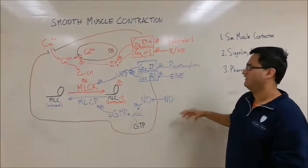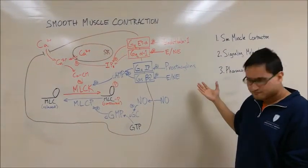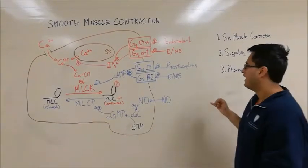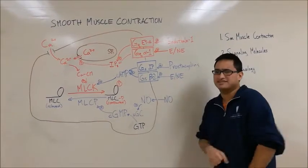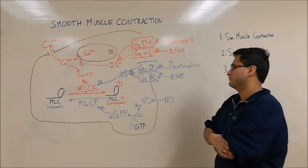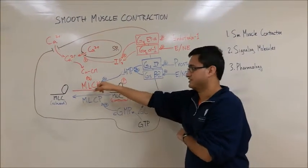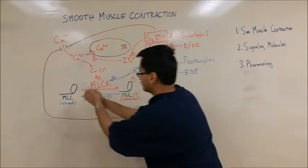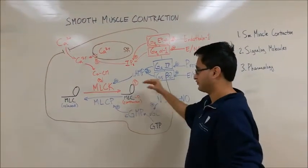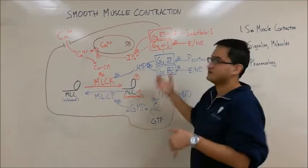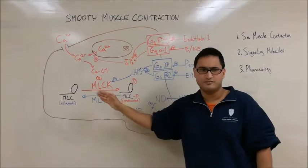Now here we have three vasodilating pathways. Prostacyclins are released by endothelial cells and travel to the smooth muscle cell to bind to the Gs receptor. Gs receptors activate adenylyl cyclase, which converts ATP to cyclic AMP. Cyclic AMP then inhibits MLCK, promoting myosin in the unphosphorylated and relaxed state — therefore reducing contraction. So prostacyclins promote smooth muscle relaxation and vasodilation.